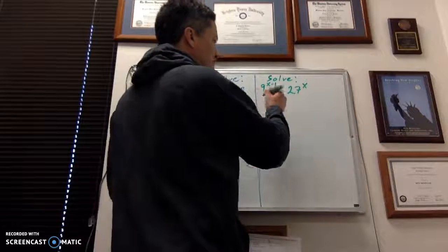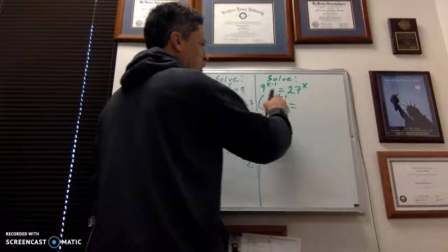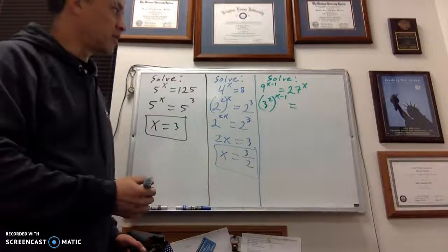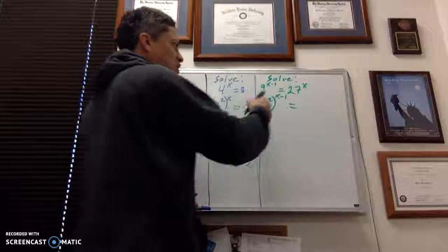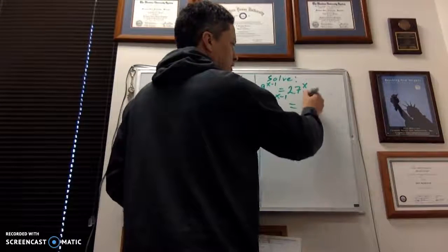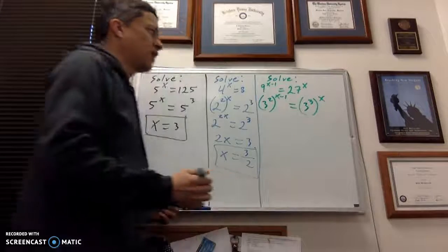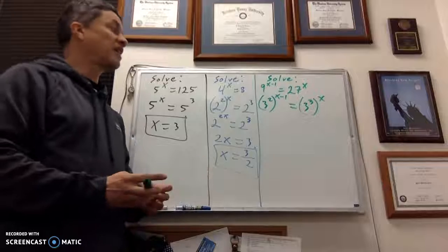So 9 is the same thing as 3 squared. So I'll change that 9 so it's 3 squared, raised to the x minus 1 power. On the right side, I've got 27 raised to the x power, and 27 is the same thing as 3 cubed. So I'll change the right side so that it's 3 raised to the 3rd power, and then raise that to the x power.